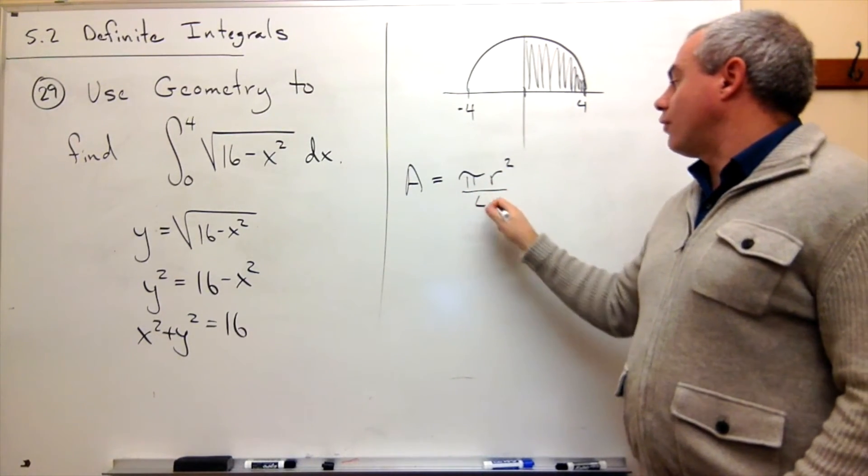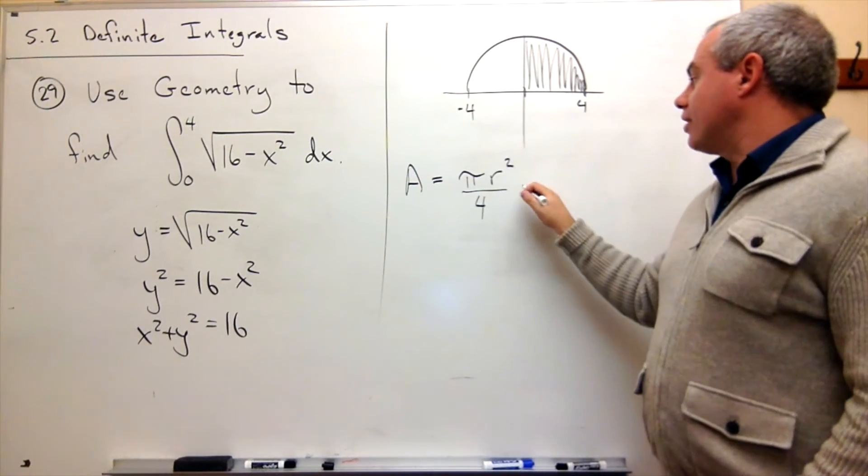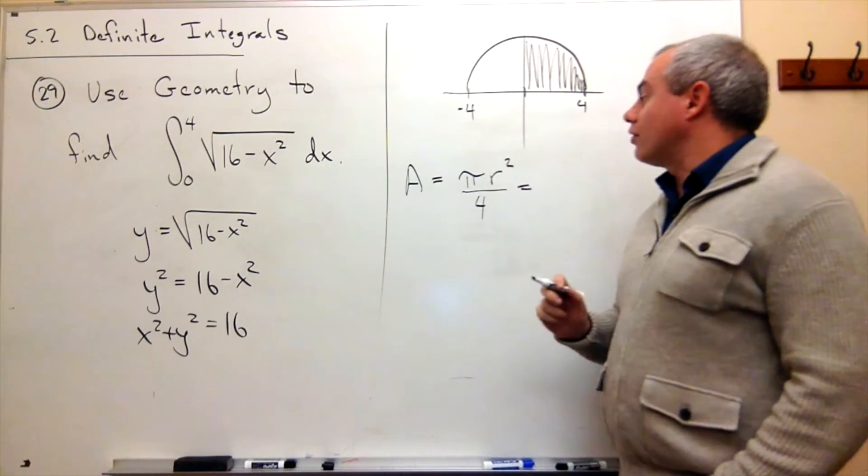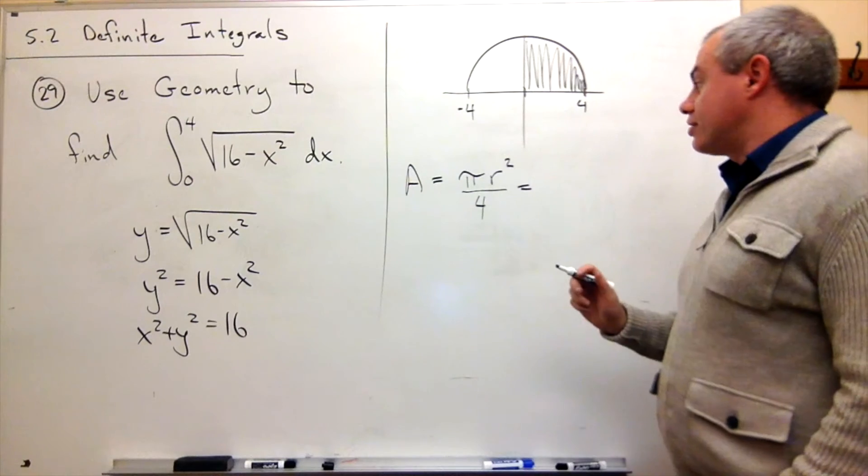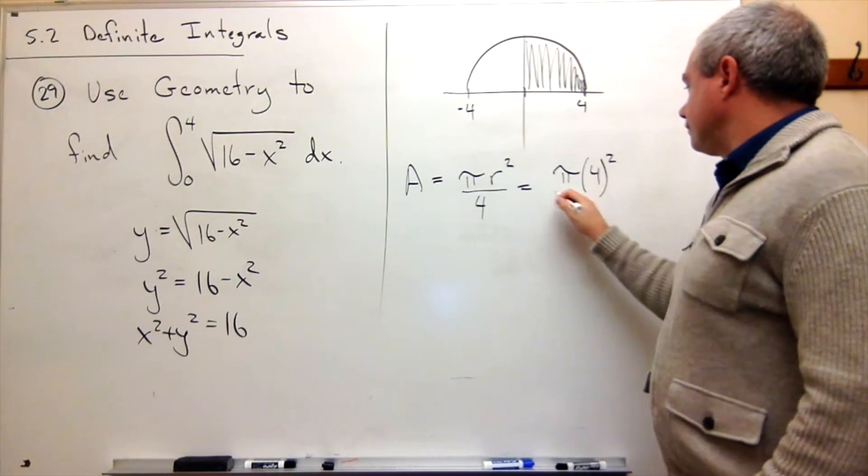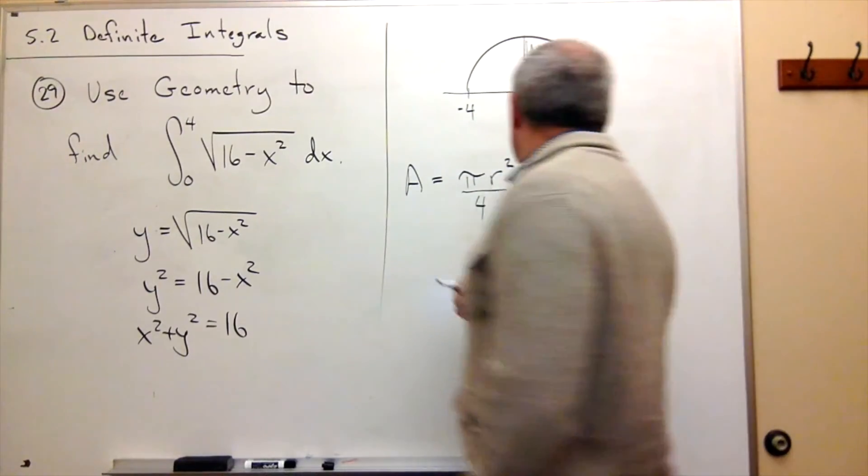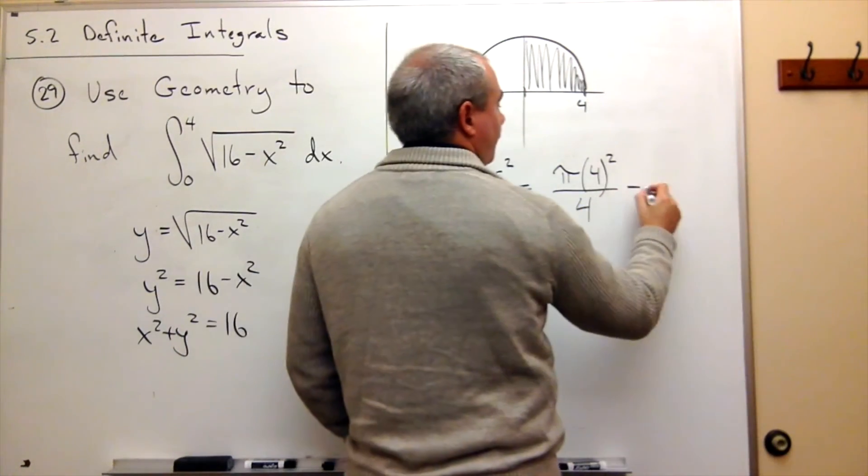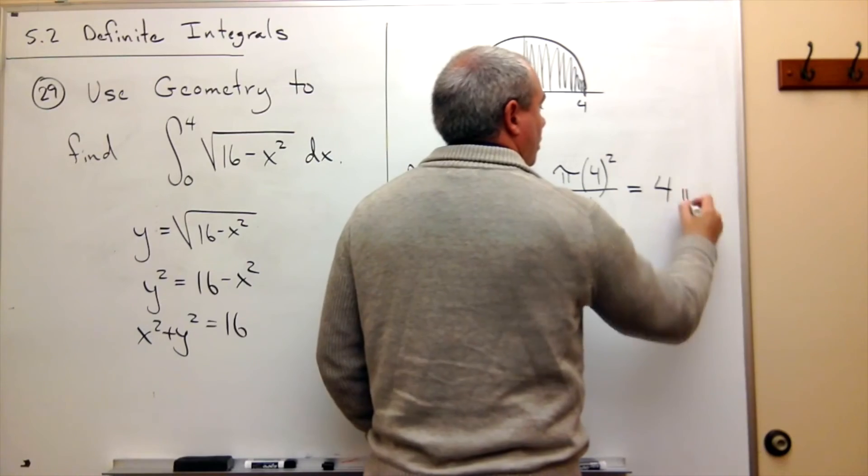So we would want to divide that by 4. So the area that we get, in this case, our radius is 4 for our circle. So we have pi times 4 squared, divided by 4, or if you prefer, this is 4 pi.